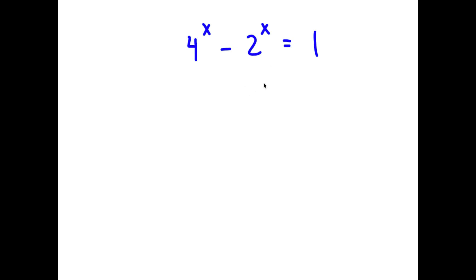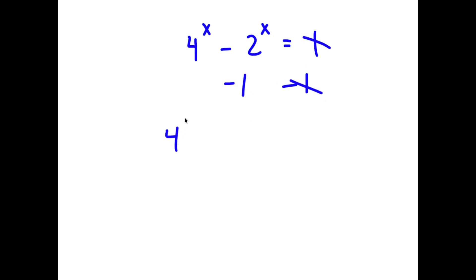So in this problem I have 4 to the power of x minus 2 to the power of x is equal to 1. To solve this, I'm going to first start by subtracting 1 on both sides. So these two cancel out, and I have 4 to the power of x minus 2 to the power of x minus 1 is equal to 0.